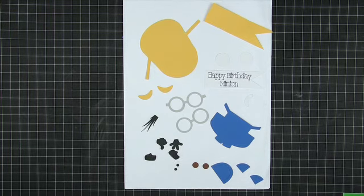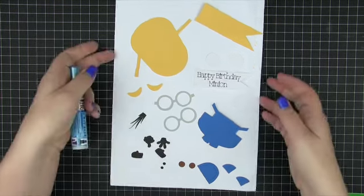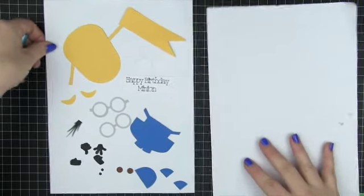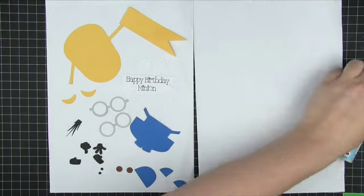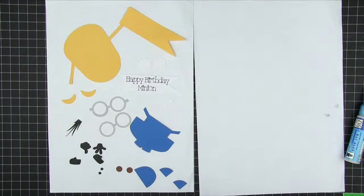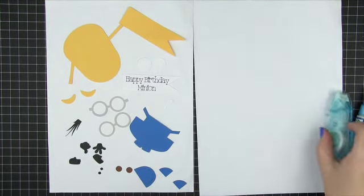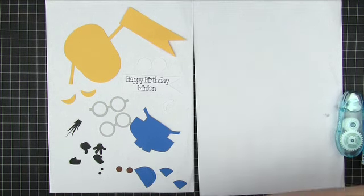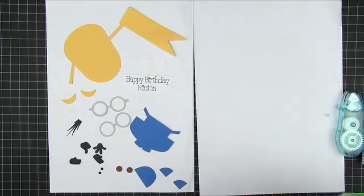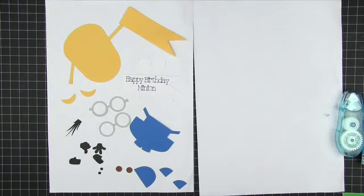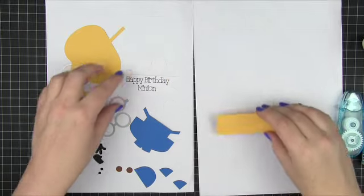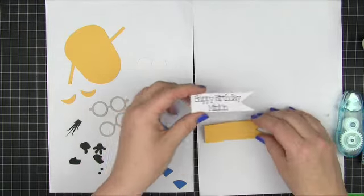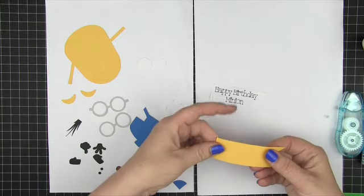Okay, so let's get gluing. First of all I've got my Zig 2A glue pen here, my tape runner, and also my Cosmic Shimmer, which as you know I love. So I'm going to take my Happy Birthday minion flag first of all and I'm going to pop that together because that's nice and simple to do.